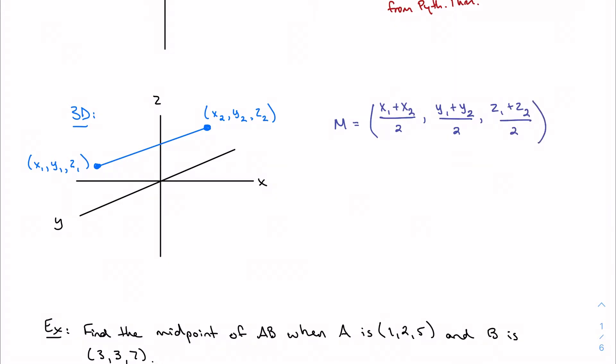And distance, the same logic follows. I have the square root of the difference in my x term squared, the difference of my y coordinates squared, and the difference in my z coordinates squared. So all I'm doing is taking my prior knowledge and just extending it out one more dimension.